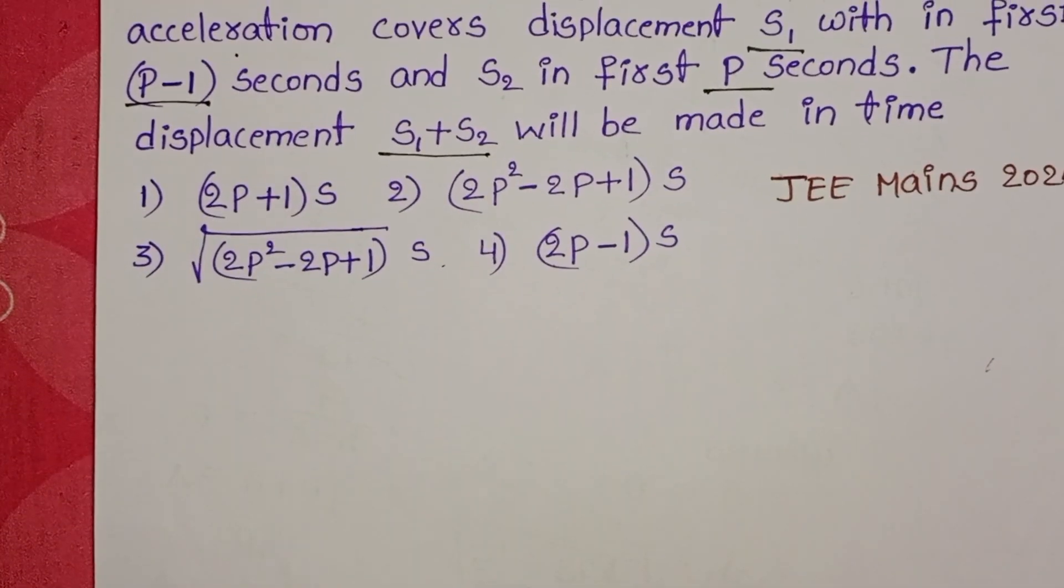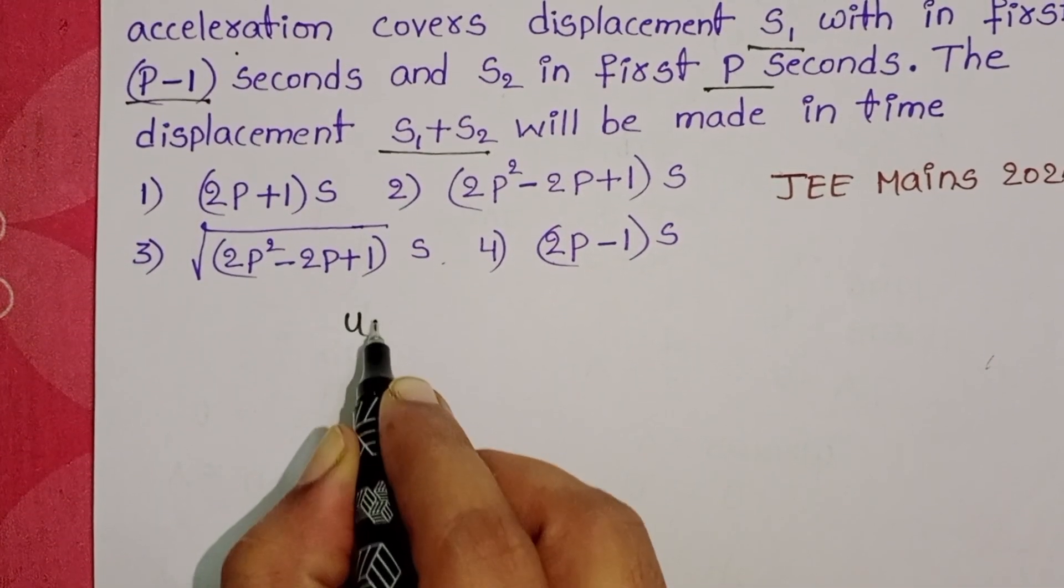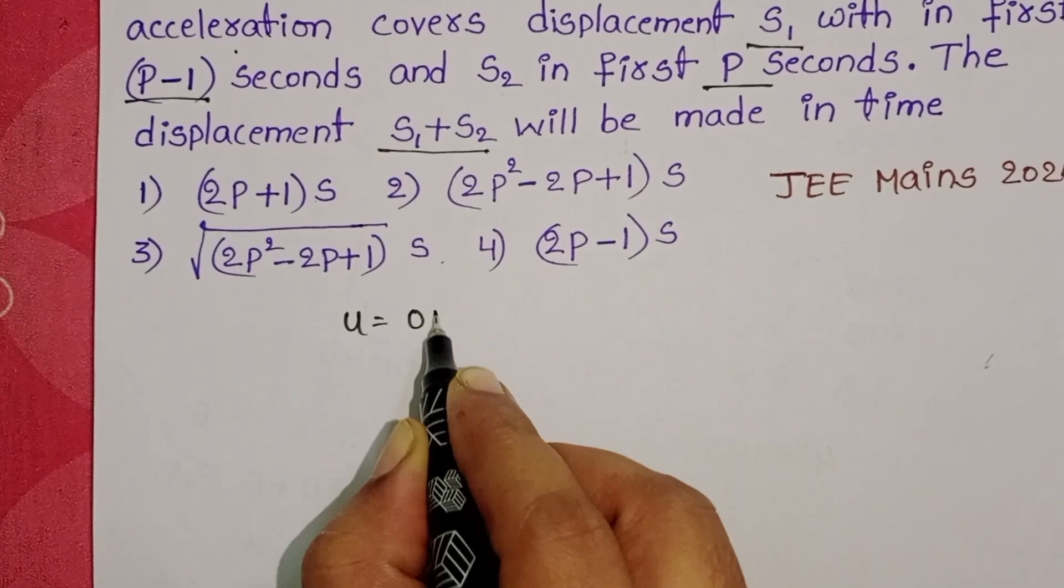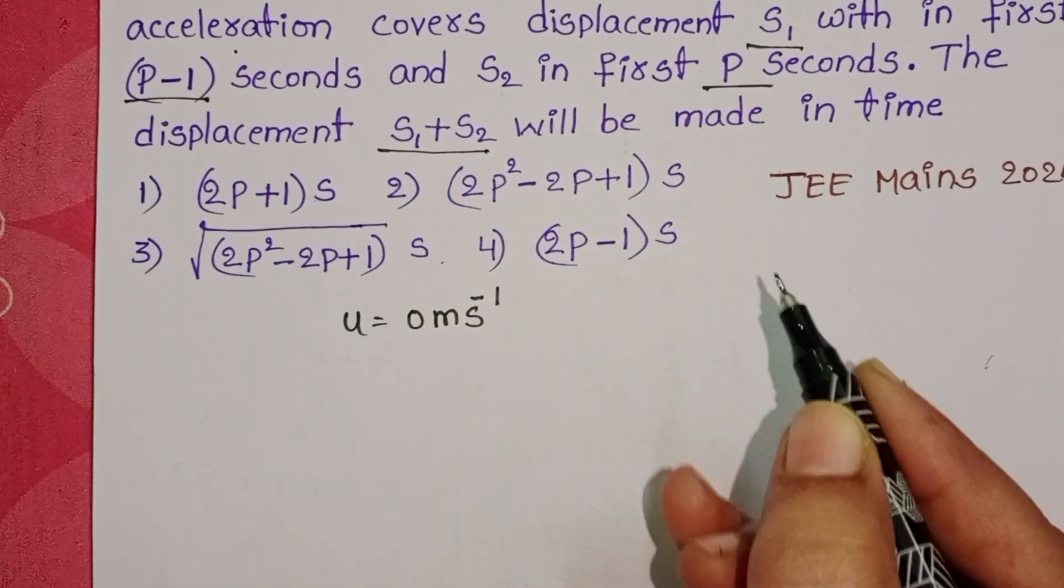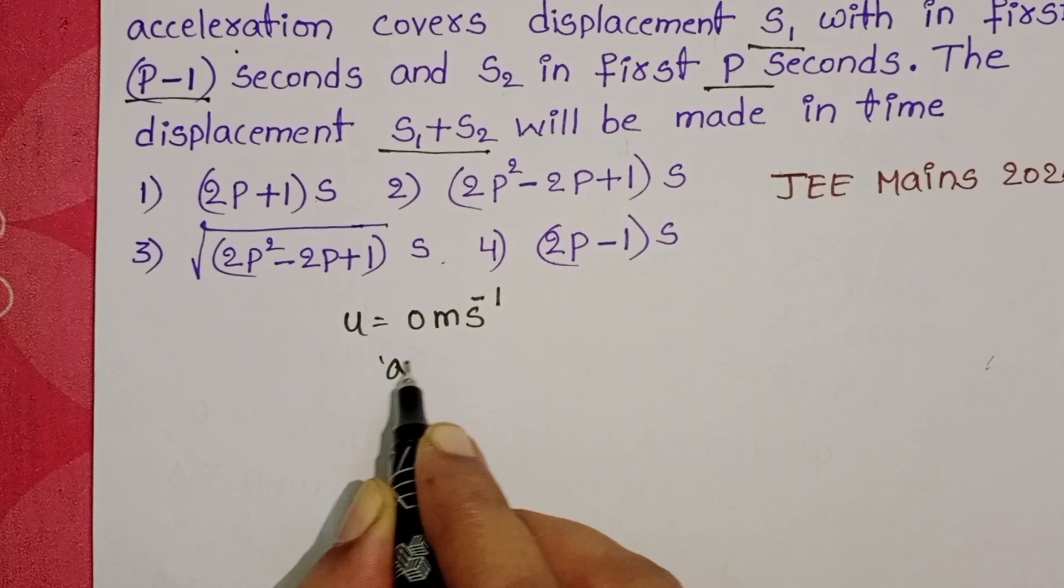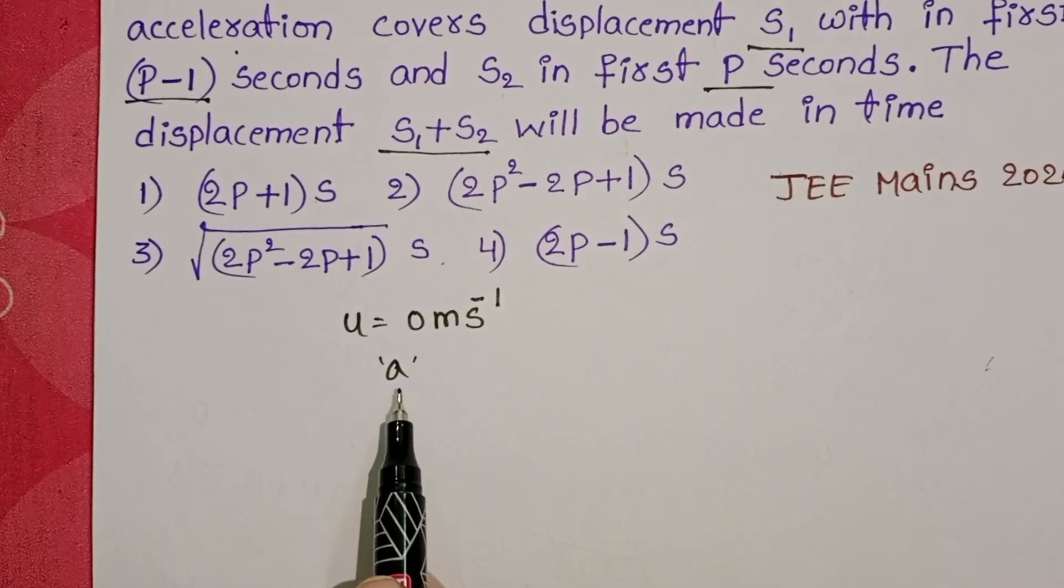In the given question, initially a body starts from rest position, so u equals 0 meters per second. The body possesses constant acceleration.